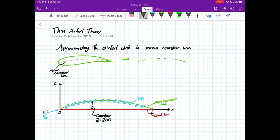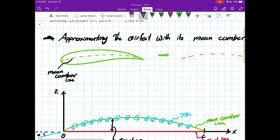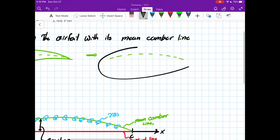So thin airfoil theory, like it says right here, is basically letting us assume that we begin this analysis by saying that this airfoil is thin enough that we can approximate it with just the camber line.